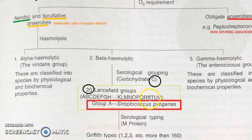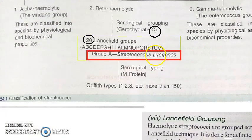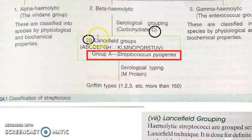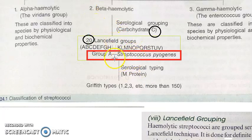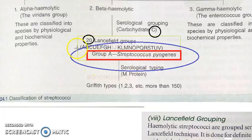Streptococcus pyogenes comes under Group A — the first of the Lansfield groups. This is serological grouping. The word 'Lansfield' is important — if asked to explain Lansfield grouping, explain from the beginning and give Group A streptococcus pyogenes as your example.